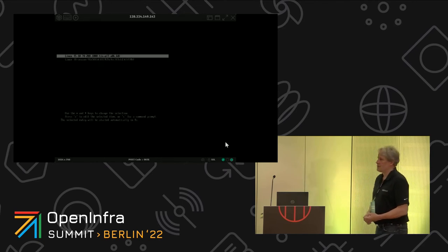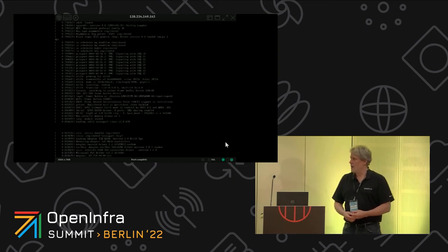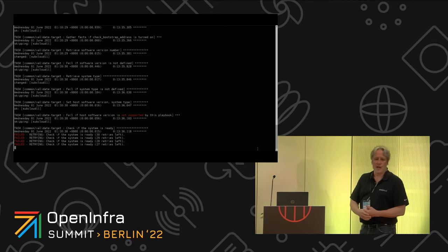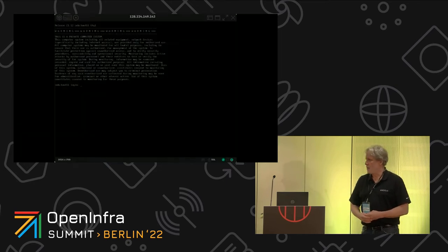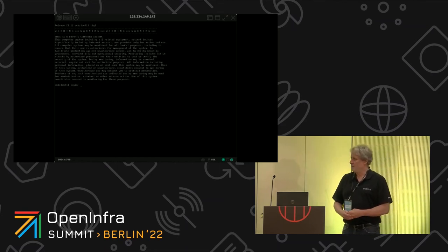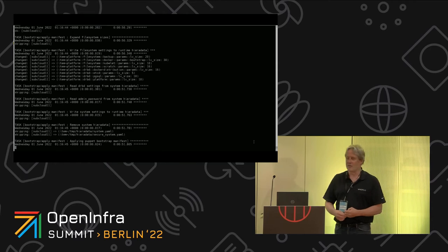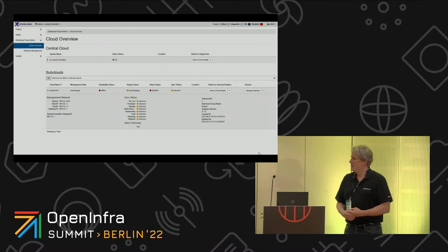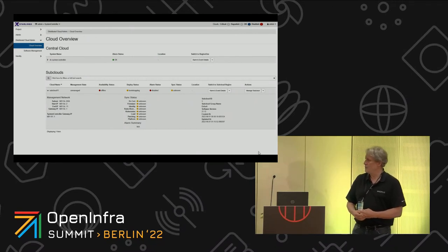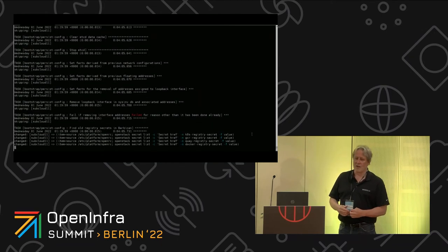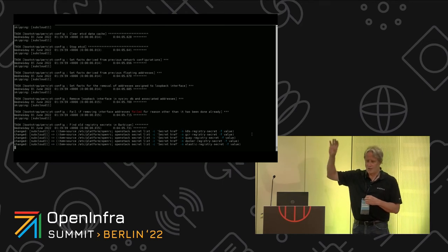We're going to boot into Linux and see the login prompt in a second. Back on the system controller, we're just waiting for it to come up — once we've given the commands to boot and install, we're waiting for it to come back up and respond over the network. All of this was initiated by that first DCManager sub-cloud install command — we haven't had to do anything manually. We're still offline disabled, but it should be changing soon. The dashboard is showing the system controller — if we had a thousand sub-clouds, you'd see all of those.